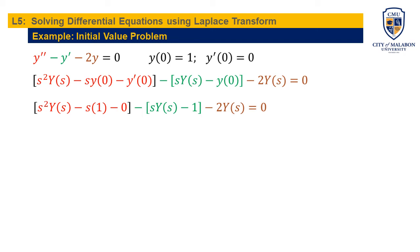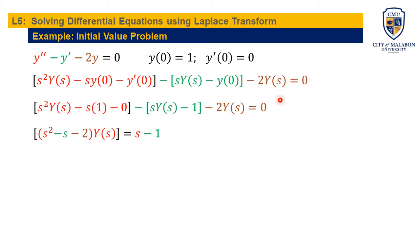Now we isolate and quarantine Y(s). Grouping the Y(s) terms — the green parts — we factor out Y(s): (s² minus s minus 2)·Y(s). The remaining terms are moved to the right side: negative s becomes positive s, and the negative 1 combined gives s minus 1 on the right. Dividing both sides by (s² minus s minus 2), our Y(s) for this problem is (s minus 1) all over (s² minus s minus 2).